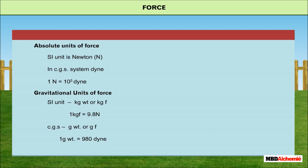Gravitational units of force. SI unit: kilogram weight or kilogram force (kg wt or kgf). 1 kgf is equal to 9.8 N. CGS: gram weight or gram weight force (gwt or gf). 1 gwt is equal to 980 dyne.